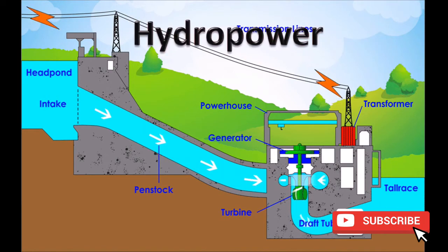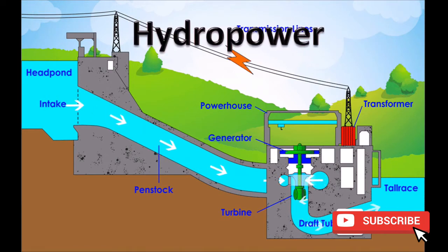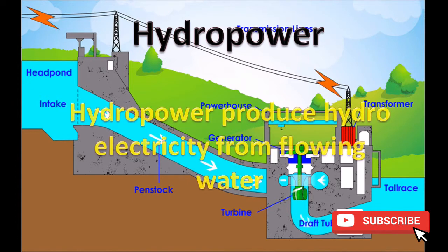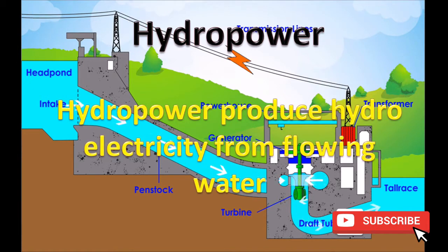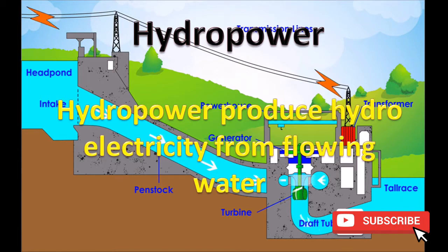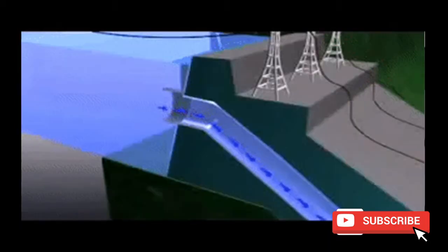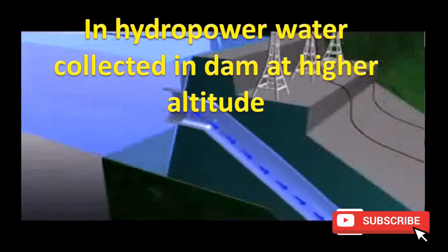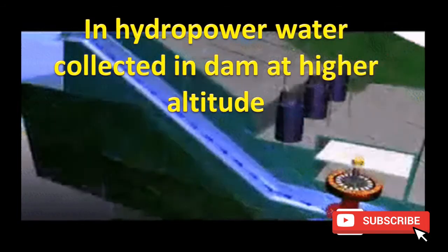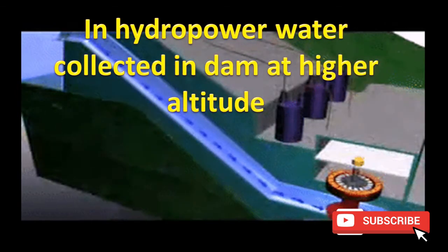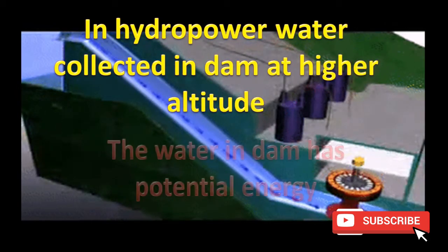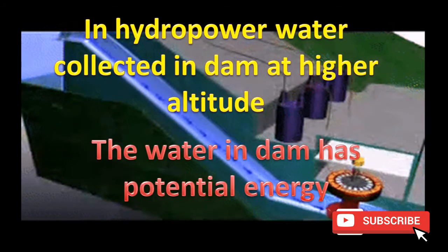Hydropower produces hydroelectricity from flowing water. In hydropower, water is collected in a dam at higher altitude. The water stored in the dam has potential energy.